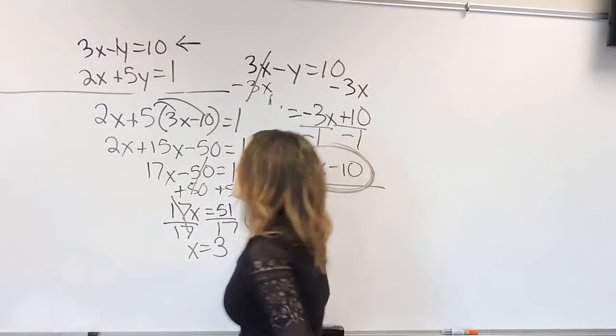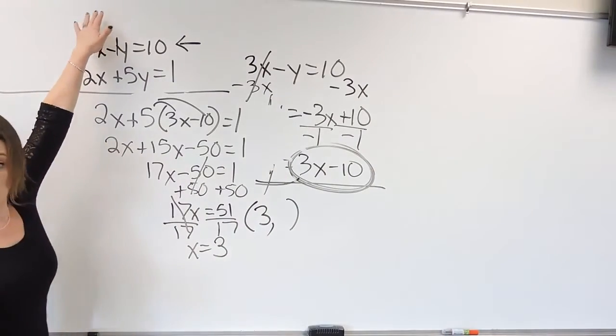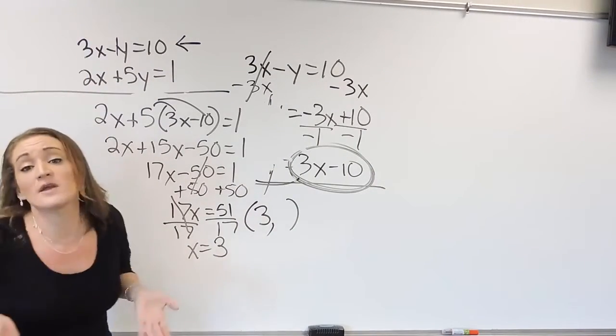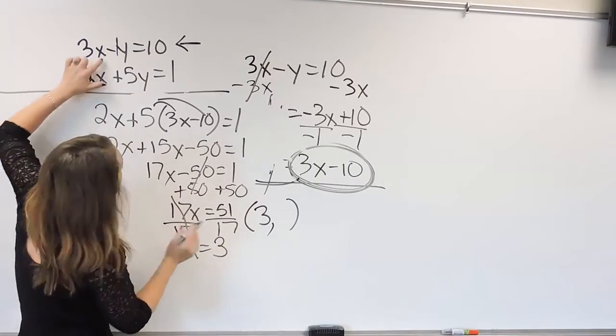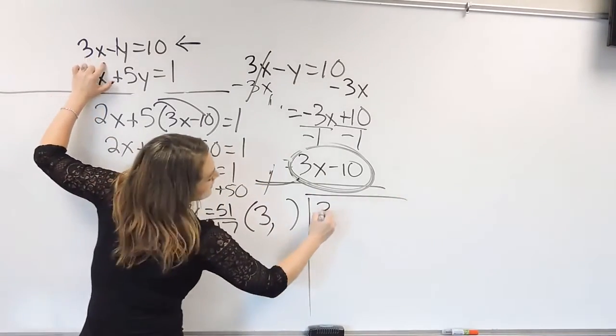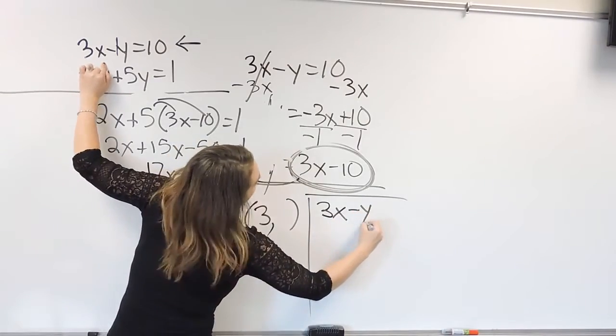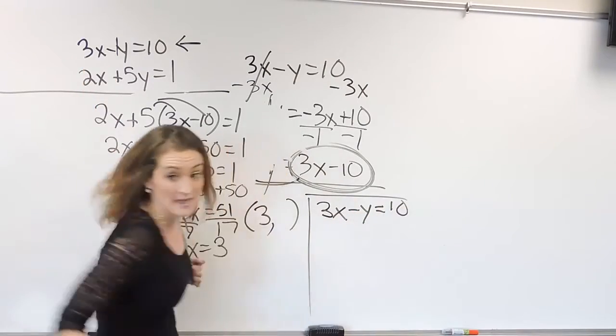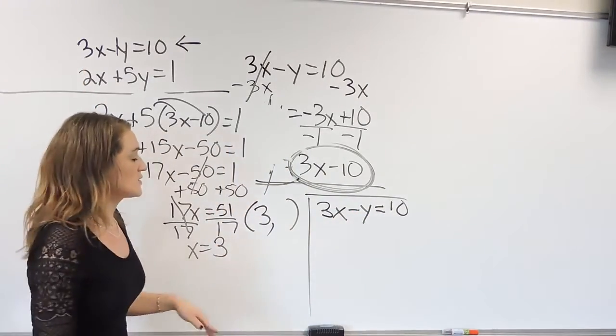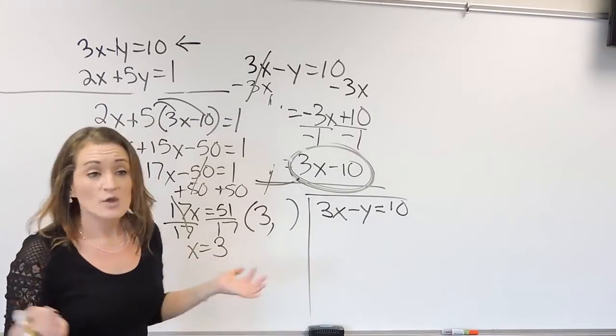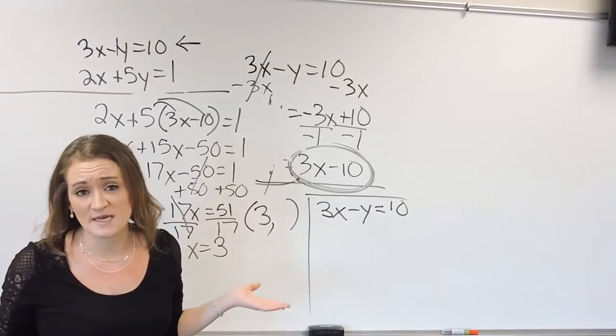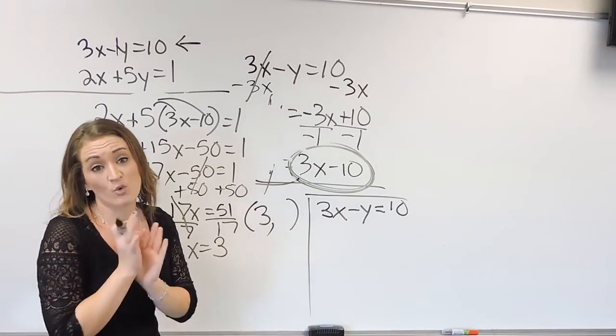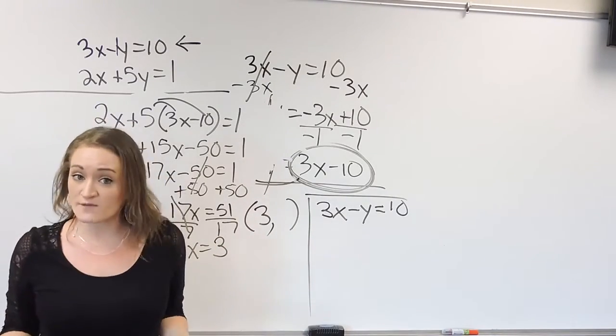So what we're going to do is we're going to go back up to our equations over here. Pick one of them. Doesn't matter which one we pick. So I'm going to go with, let's see, I'm going to go with the top equation, 3x minus y is equal to 10. And there's no particular reason why I picked that one, just because. Normally I pick the one that either has smaller numbers or that has more positives in it, but it honestly does not matter which one you pick. Just pick one of them.